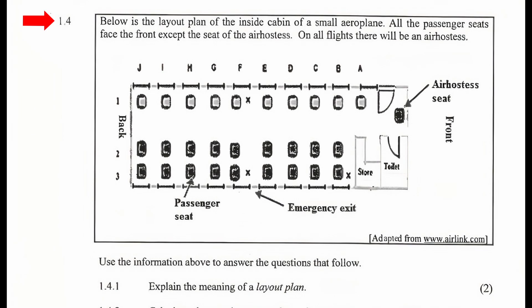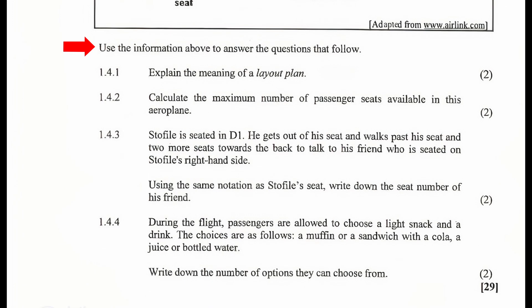Question 1.4: Below is the layout plan of the inside cabin of a small aeroplane. All the passenger seats face the front except for the air hostess. On all flights, there will be an air hostess. On the layout of this aeroplane, we are shown the passenger seat that faces the front of this cabin and one air hostess seat that faces towards the back of the cabin. The seats are identified by numbers along the vertical and letters along the horizontal. We are instructed to use the information above to answer the questions that follow.